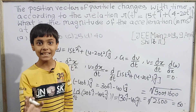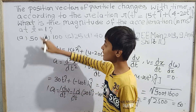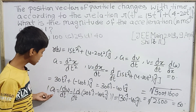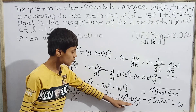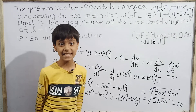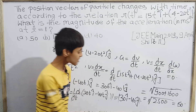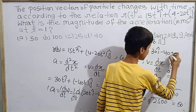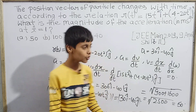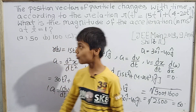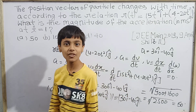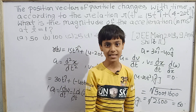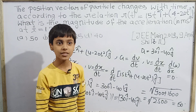One very interesting thing to notice: the question specified t = 1, but when we look at the acceleration a = 30 î − 40 ĵ, there is no time variable present. This means the acceleration has no relation to time — it is constant regardless of whether t = 1, 2, 3, or 4. So we have uniform acceleration in this case.